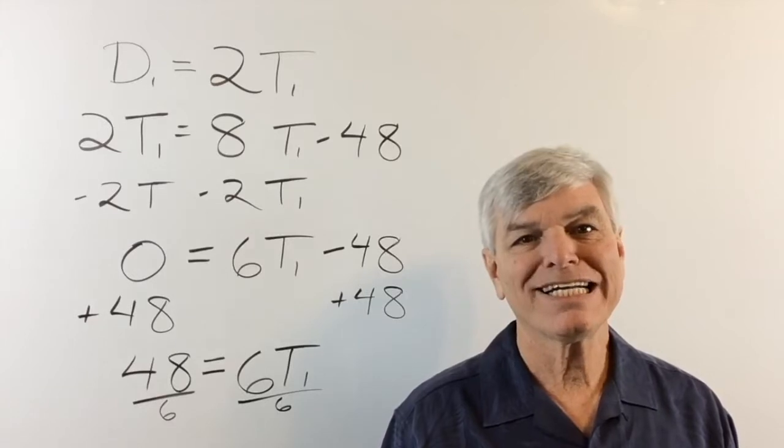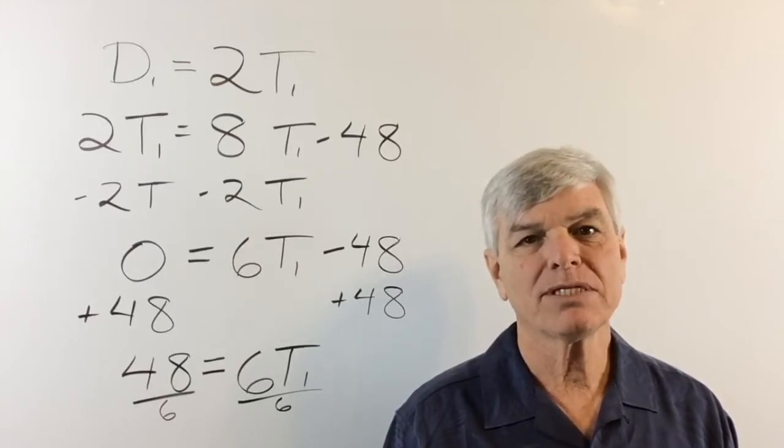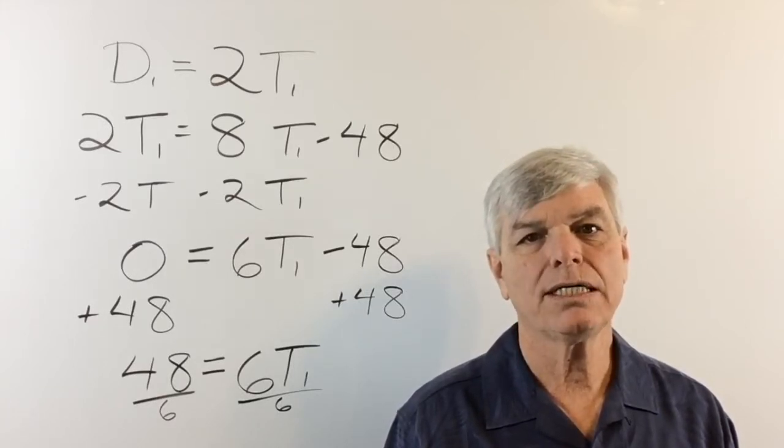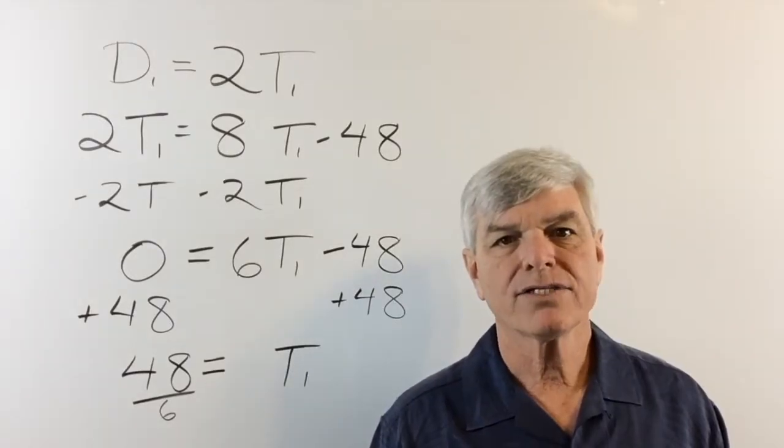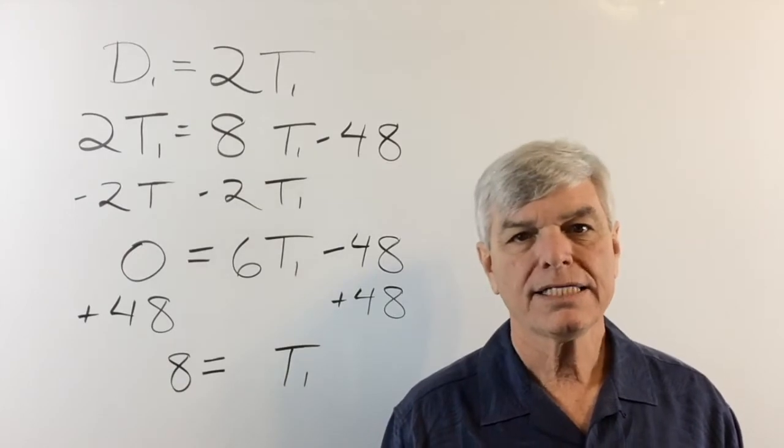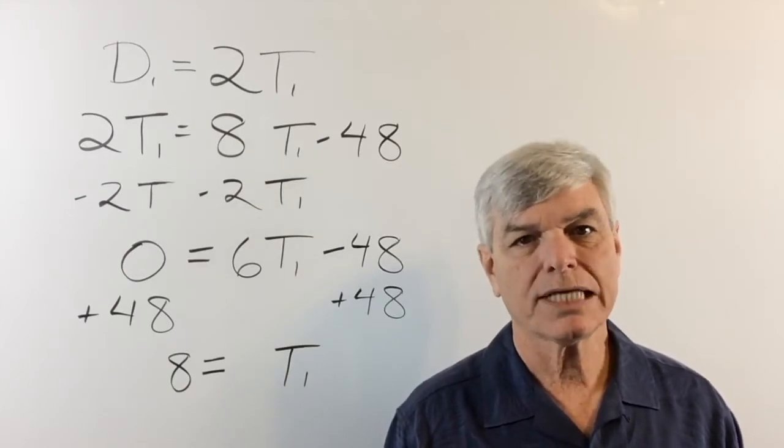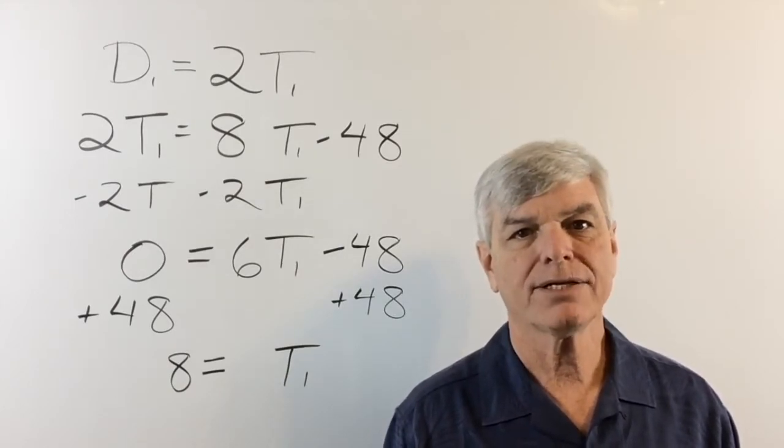I'm writing tiny 6's because we're running out of room but 6 over 6 is 1. That's going to isolate our T1. 48 over 6 is 8 and T1 equals 8. Okay, let's go back to the grid.